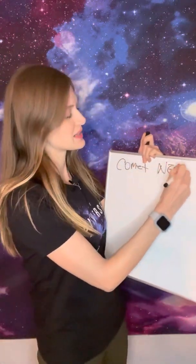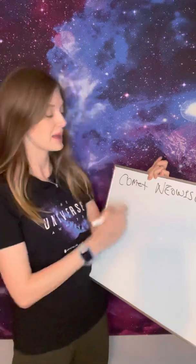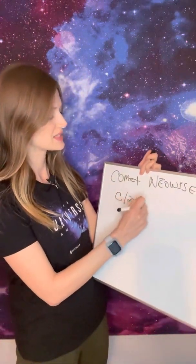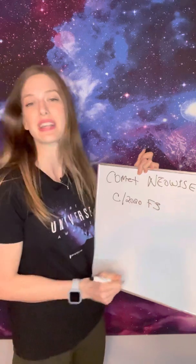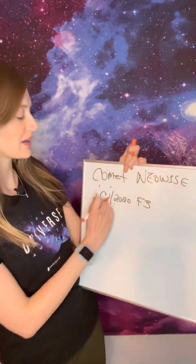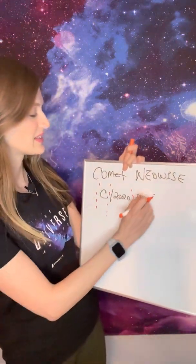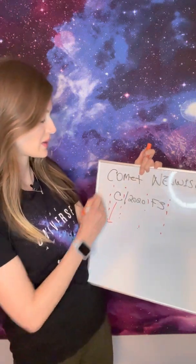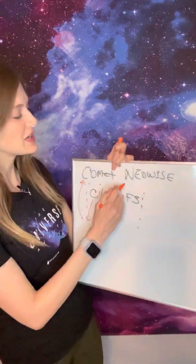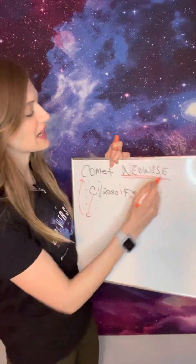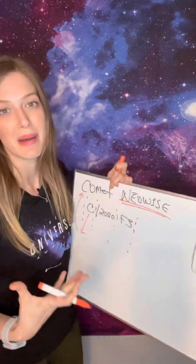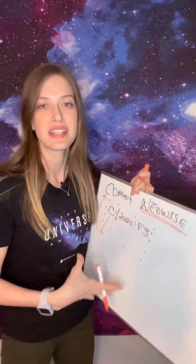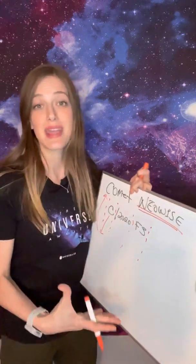Comet NEOWISE — the astronomical classification name is C/2020 F3. Let's break up each category, starting with 'C'. C stands for comet. NEOWISE is the name by which most of us will know a comet, like Halley's Comet — it's usually named after its discoverer.